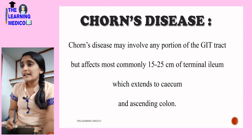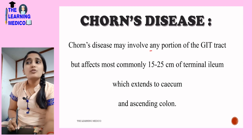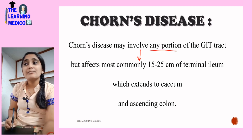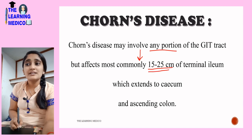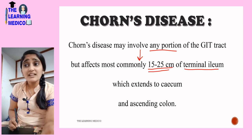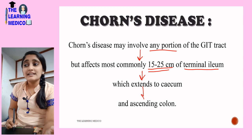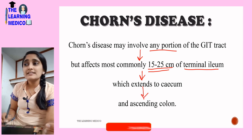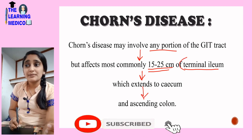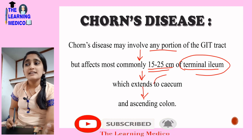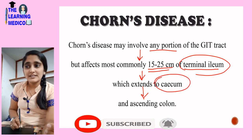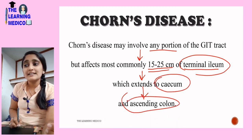Crohn's disease can affect any portion of the GI tract, but it commonly affects the 15 to 25 cm of the terminal ileum. From there, it extends through the cecum and then to the ascending colon, so it affects a large portion of the GI tract but mostly the terminal ileum.